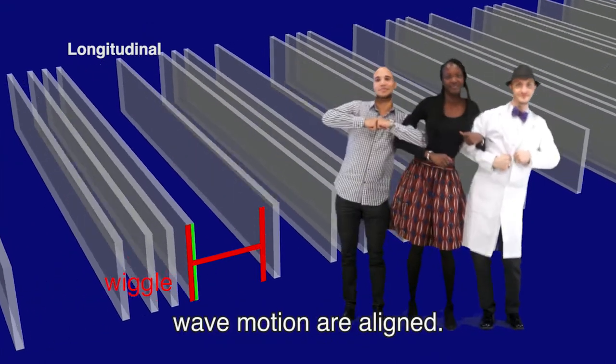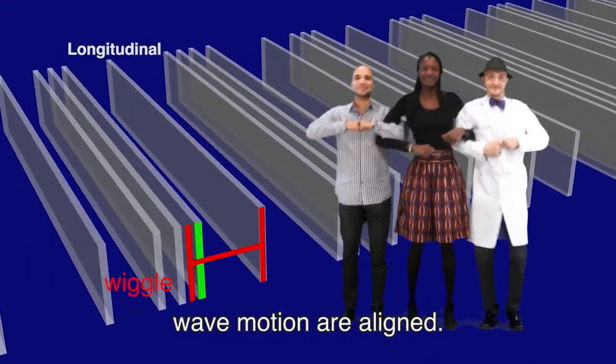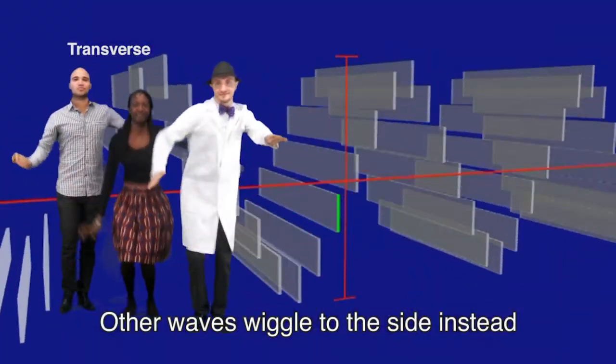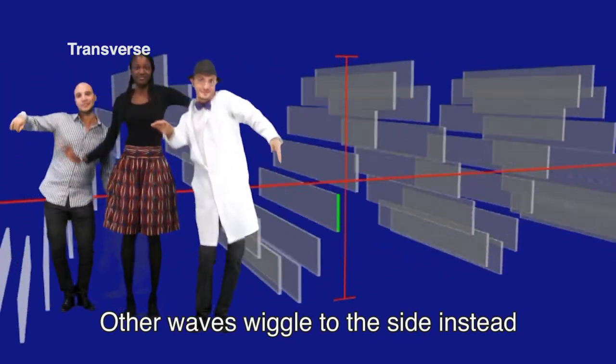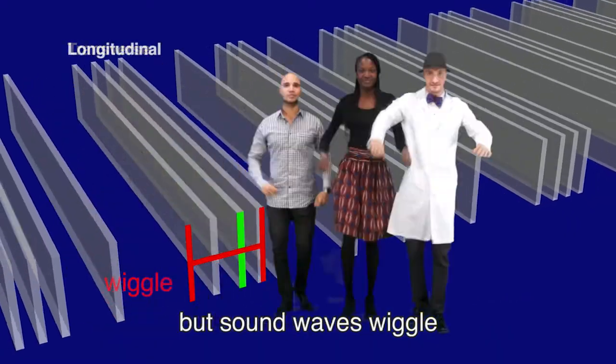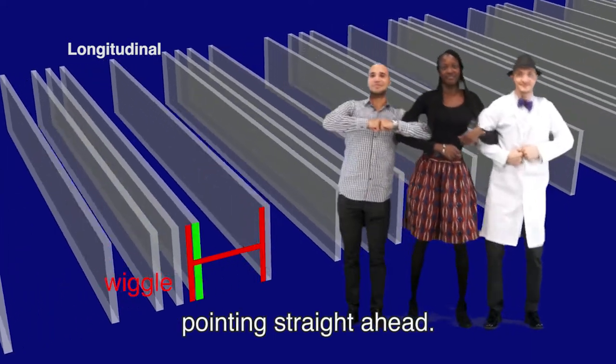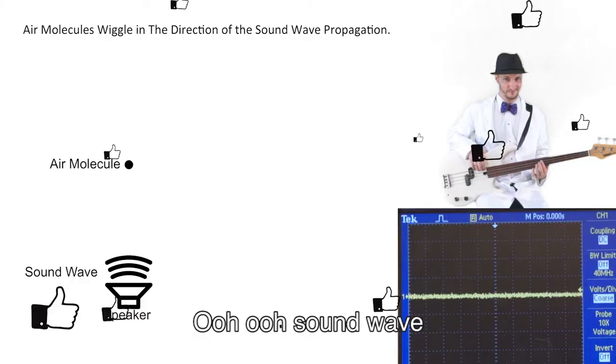A sound is a wave of a special kind, where wiggling and wave motion are aligned. Other waves wiggle to the side instead, but sound waves wiggle pointing straight ahead.